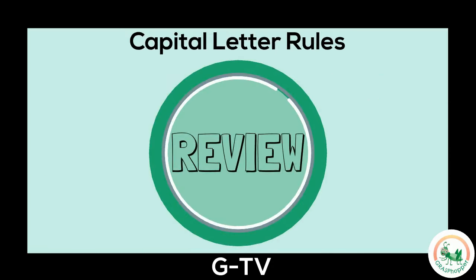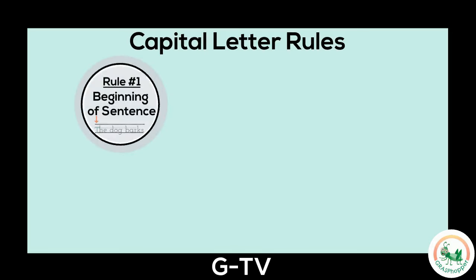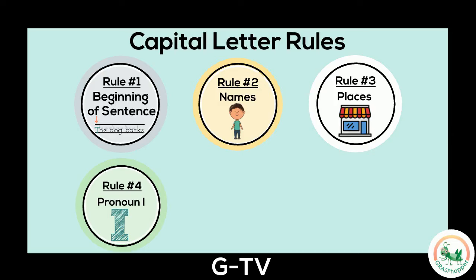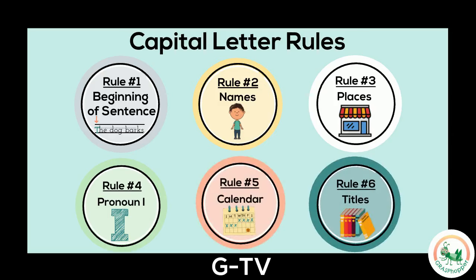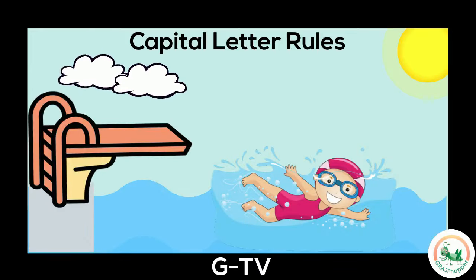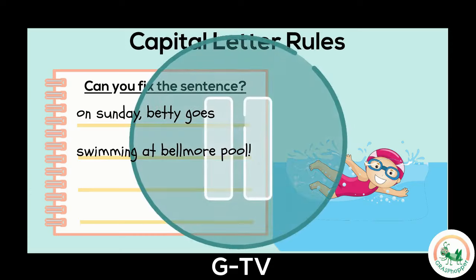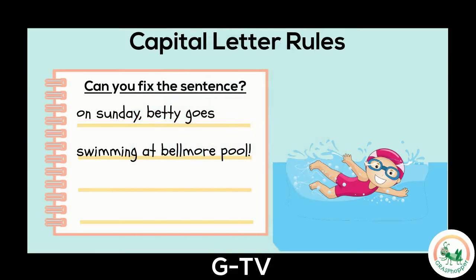Let's review the six basic rules for capitalization. We should write a capital letter for the beginning of a sentence. Let's look at this picture of Betty going swimming. Let's read the sentence about it: On Sunday, Betty goes swimming at Belmore Pool. Think about all of our rules to fix this sentence. Did you capitalize the S in Sunday because it's a day of the week? Did you also capitalize B in Betty because it's a name? Finally, did you make a capital B in Belmore and P in Pool because it's a specific place?